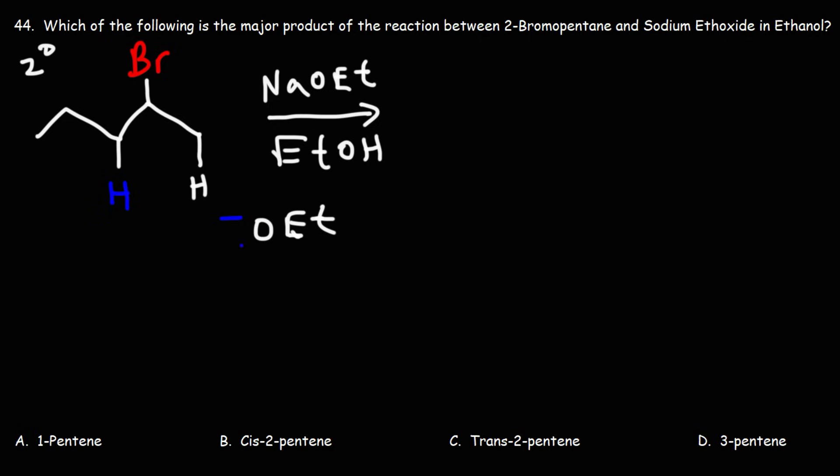If ethoxide goes for the white hydrogen, the base is going to grab the hydrogen, the carbon-hydrogen bond will break, those electrons will be used to form a pi bond, and the leaving group is going to leave. All of these processes will occur at the same time, which means that the E2 reaction is a concerted reaction mechanism.